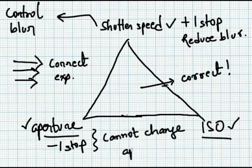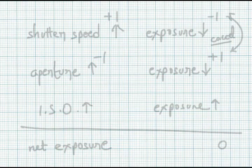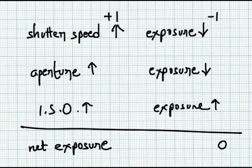Now suppose you don't want to increase aperture. This can be because you want a shallow depth of field. You can still control ISO to get the right exposure. If you increase ISO by one stop, it will increase exposure by one stop, and again net change in exposure is zero.